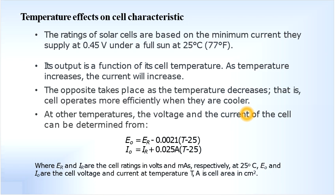At other temperatures, the voltage and current of the cell will be determined using some empirical relationships. E0 is equal to Er minus 0.0021 into (T minus 25), whereas I0 is equal to Ir plus 0.025A into (T minus 25). Here, Er and Ir are the cell ratings in volts and milliamps at 25 degrees centigrade, and E0 and I0 are the cell voltage and current at the given temperature T. Here, A is cell area in centimeter square.